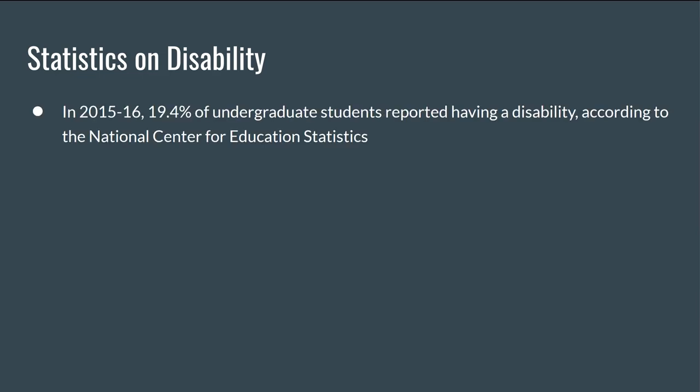I'm really looking forward to covering all of this in more detail, so let's jump right in with some conversation about disability and neurodivergence. I thought it would be best to open with an understanding of how many disabled students attend undergraduate colleges and universities in the United States. In the 2015–2016 academic year, 19.4% of undergraduate students reported having a disability, according to the National Center for Education Statistics.